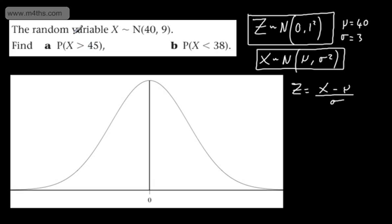In the first part of this question, we're asked to find the probability that x is greater than 45. So making the substitution, I can now say z will be equal to 45 minus mu, which is 40, divided by sigma, which is the standard deviation, which is going to be 3.